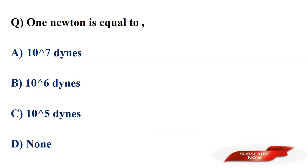1 Newton is equal to? Options: 10⁷ dynes, 10⁶ dynes, 10⁵ dynes, none of those. Answer: option C, 10⁵ dynes. 1 N equals 10 raised to 5 dynes.